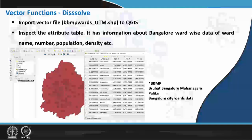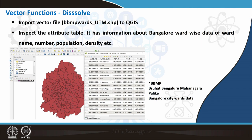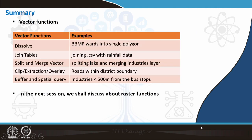To summarize today's class: we saw various vector functions — starting from BBMP wards and how to dissolve them into a single polygon. We saw how to join tables from a CSV or Excel sheet into rainfall data. We saw how to split a lake into 2 parts and how to merge 2 different industry layers. We also saw clipping or extraction of road layers, and finally buffer analysis and spatial query to find industries within 500 meters of a bus stop. In the next class, we will see various raster functions. Thank you very much.